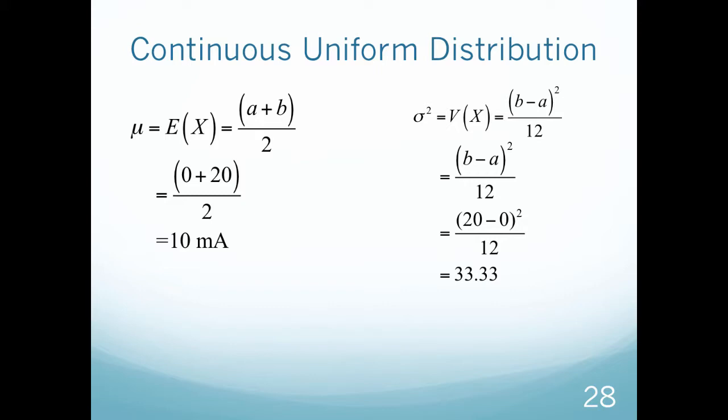If you notice, that expected value and variance are the same ones I got using different formulas in a previous video. The reason is because this all along was a continuous uniform distribution. Even though I used different formulas in previous videos, I could get the same answer using the continuous uniform distribution formulas because it falls into that category as well.